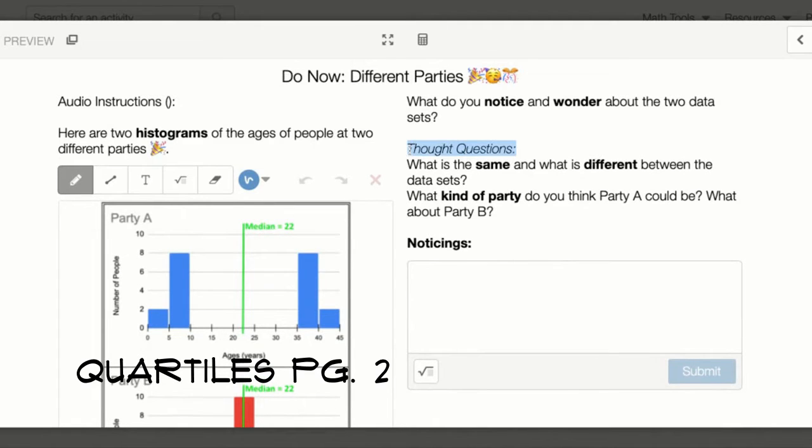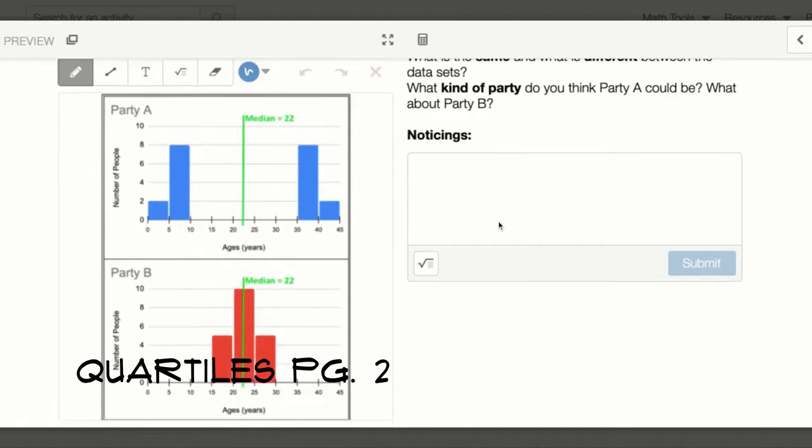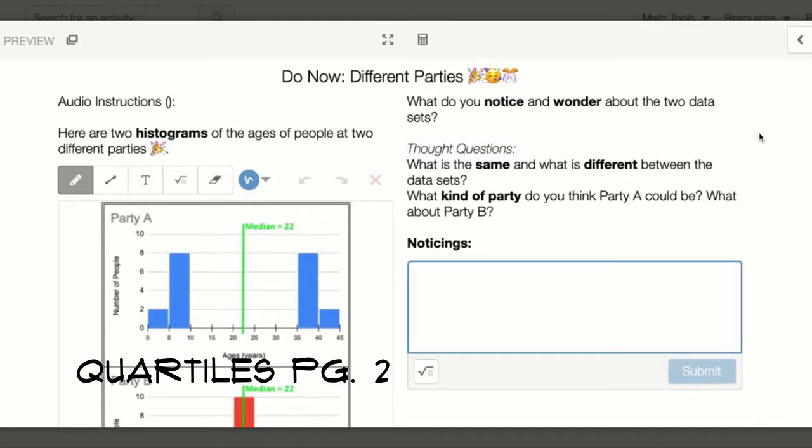What do you notice and wonder about the two data sets? Here are some thought questions that will help you answer that question above. What is the same and what is different between the data sets? What kind of party do you think party A could be? What about party B? Type your noticings below. That is page 2.